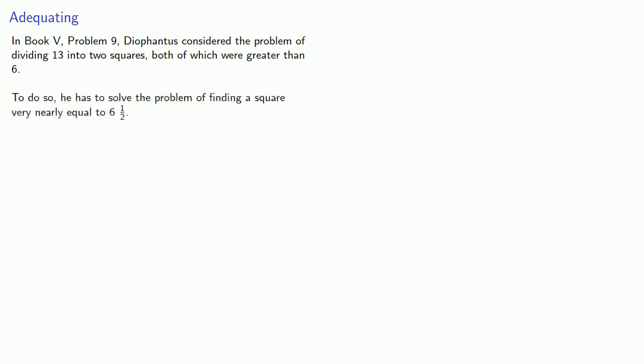Now for a variety of reasons, one of the most important problems in Diophantus occurs in Book 5, Problem 9, where Diophantus considered the problem of dividing 13 into 2 squares, both of which were greater than 6. To do so, he has to solve the problem of finding a square very nearly equal to 6 and a half, and the procedure he follows has been termed adequating.